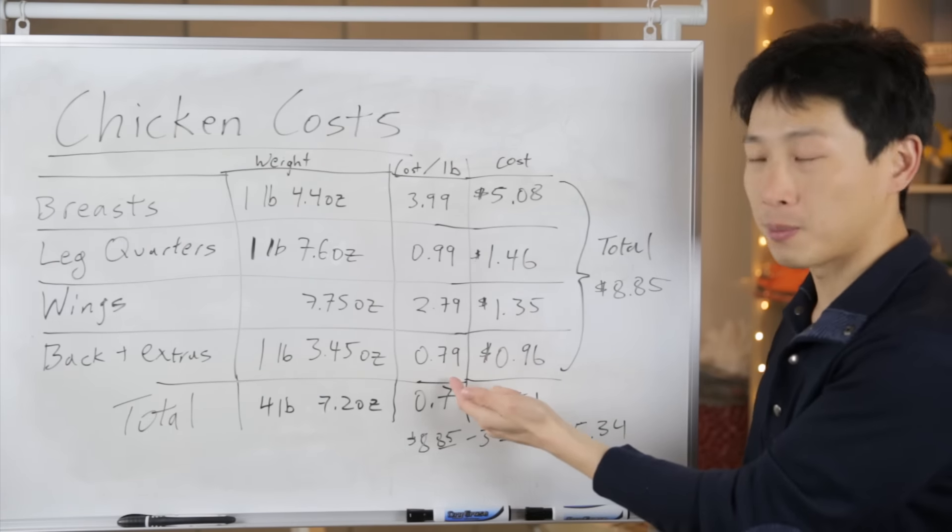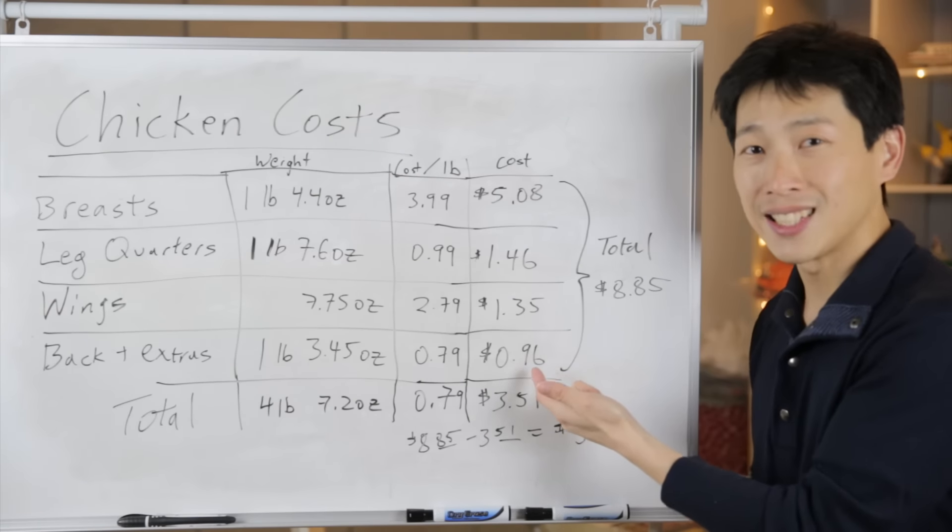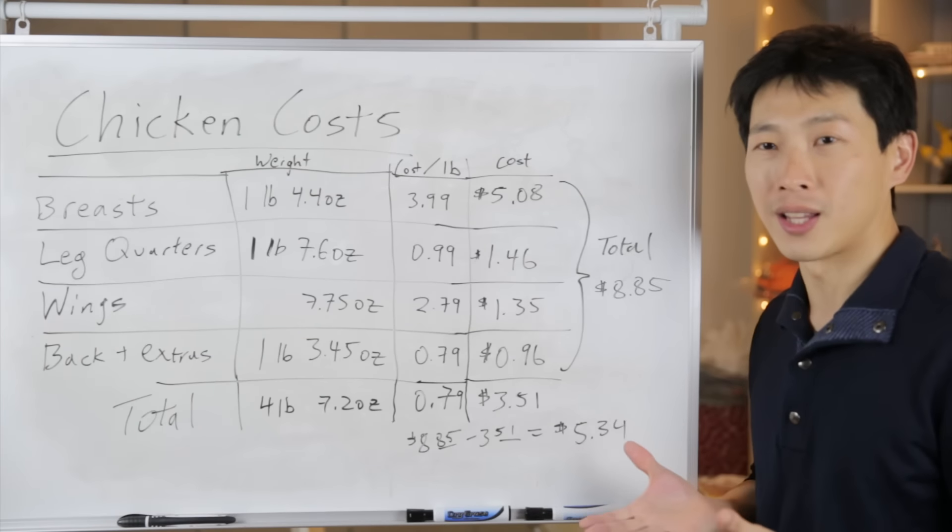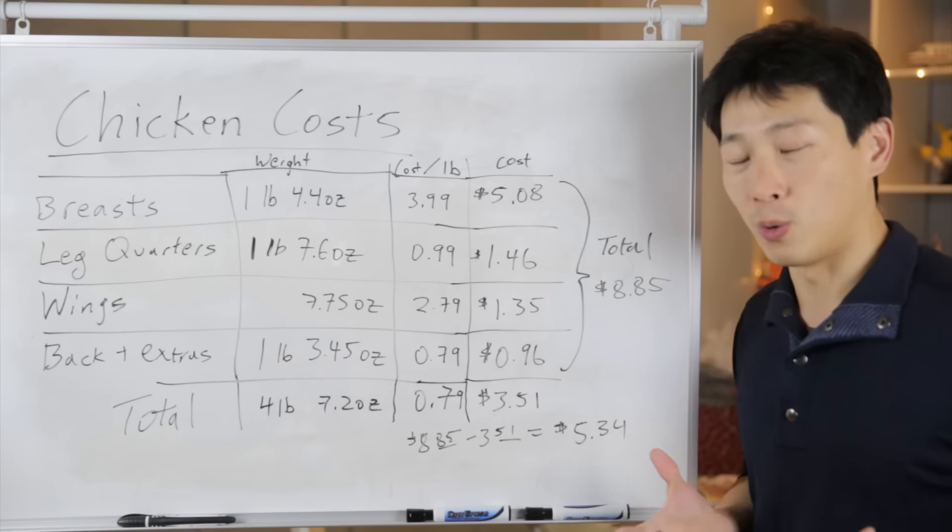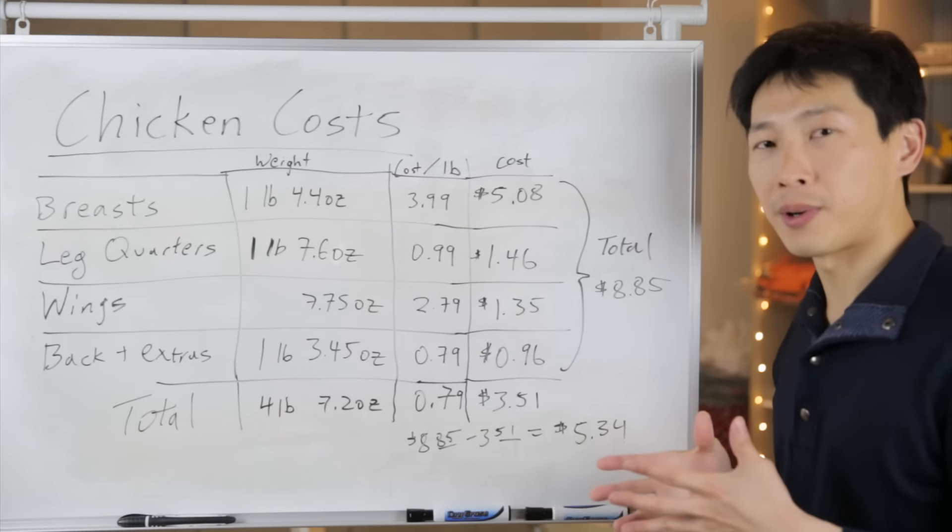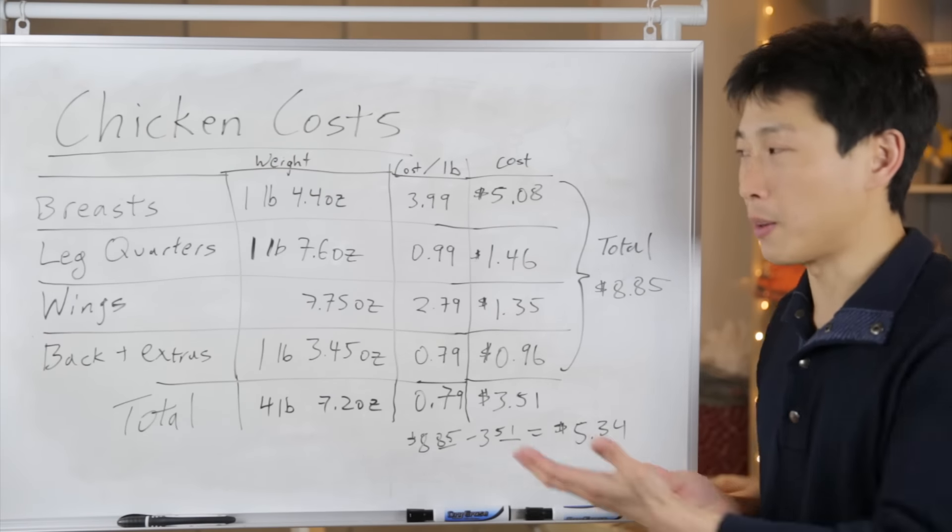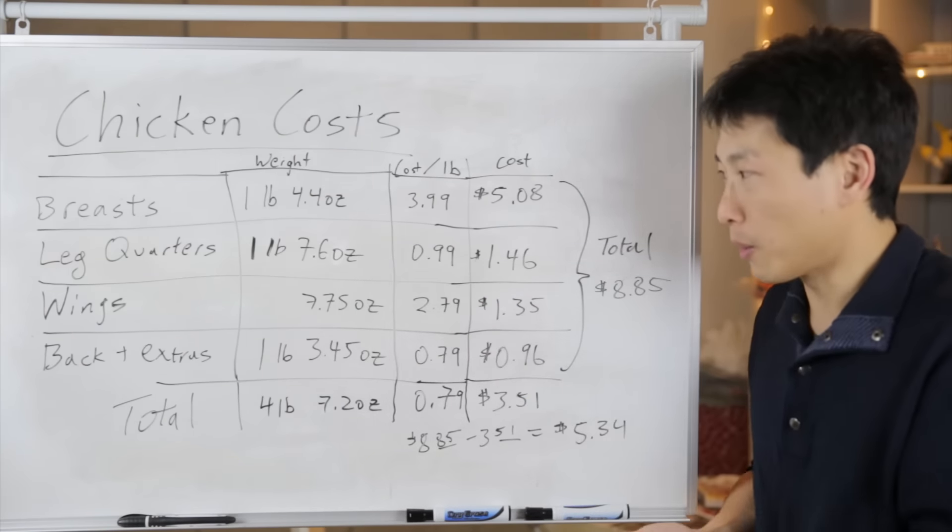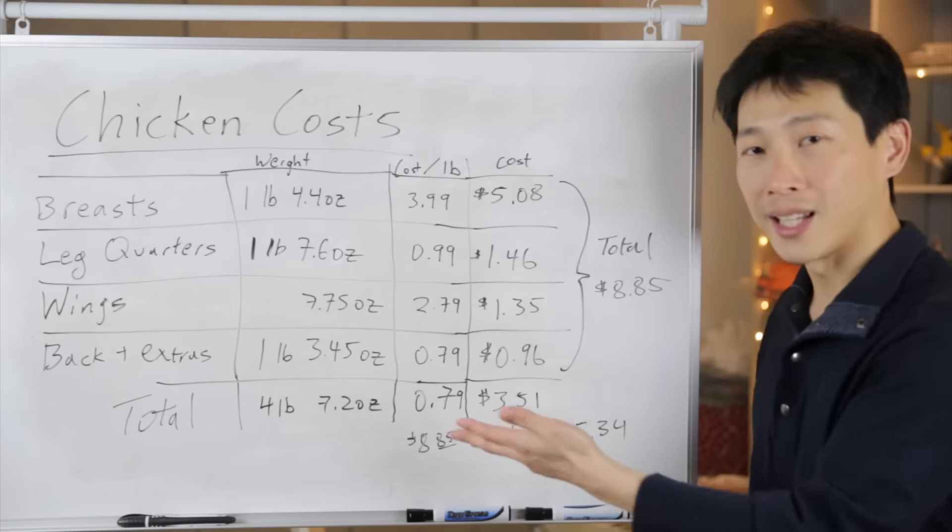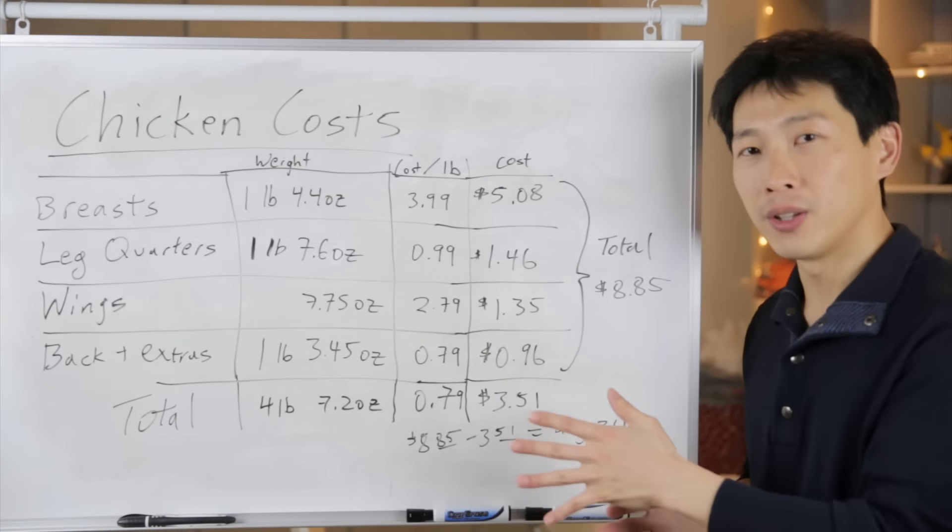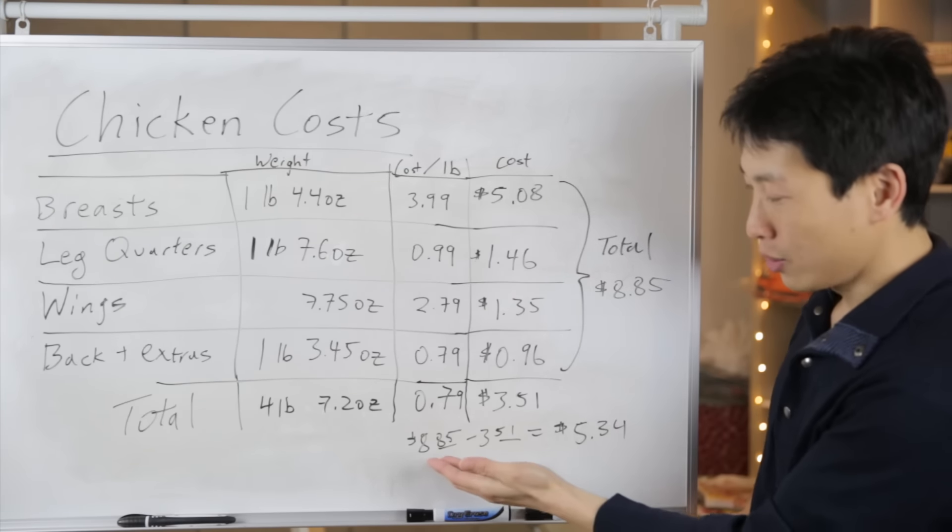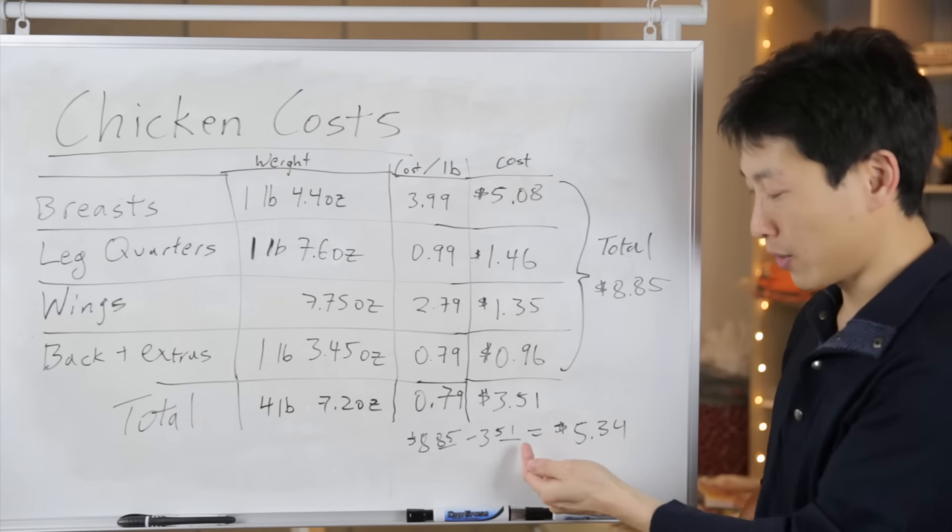The back and extras here, if you buy separately, I estimate about 79 cents a pound, which is really 96 cents, just a dollar for all of that. But really you can take this and make chicken broth instead of buying the canned ones. You can make a whole lot of chicken broth if you just buy the whole chicken all the time. Now my estimate for the cost per pound for the chicken parts is pretty much like a good deal type of level, because $3.99 for chicken breast is a pretty good deal, and 99 cents for leg quarters are pretty good. It's the prices around here in the Bay Area. So I add up all of these if you were to buy them separately and it comes out to eight dollars and 85 cents. You subtract that from what I actually paid, three dollars 51 cents. The difference here that you save is five dollars and 34 cents.